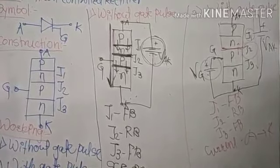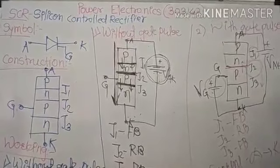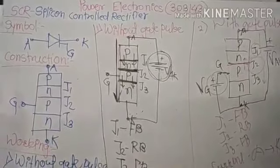These are the two methods in the working principle of SCR: without gate pulse and with gate pulse. In the next lecture, we will learn the VI characteristics of the SCR. Thank you.